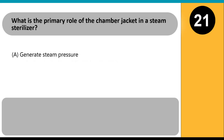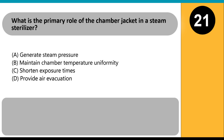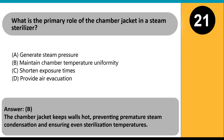What is the primary role of the chamber jacket in a steam sterilizer? A. Generate steam pressure. B. Maintain chamber temperature uniformity. C. Shorten exposure times. D. Provide air evacuation. Answer: B. The chamber jacket keeps walls hot, preventing premature steam condensation and ensuring even sterilization temperatures.